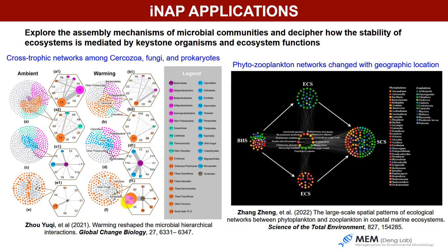With the use of INAP, it is possible to explore the assembly mechanisms of microbial communities and to find the stability patterns of ecosystems with keystone organisms. Here are two examples. One used INAP to analyze the trophic network among Archaea, Bacteria, and Eukarya. Another one used INAP to construct the phytoplankton-bacteria networks in coastal marine ecosystems.